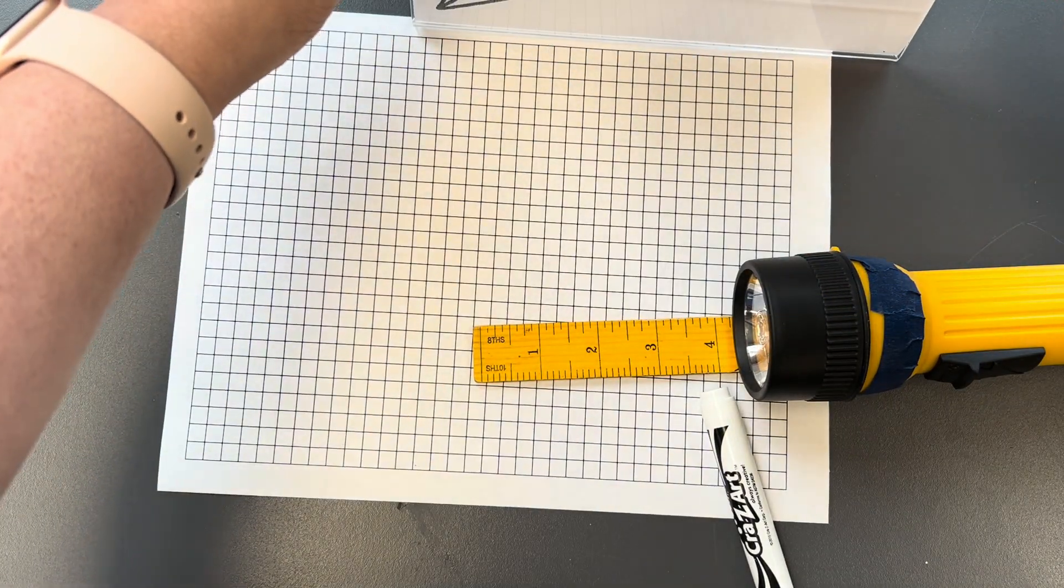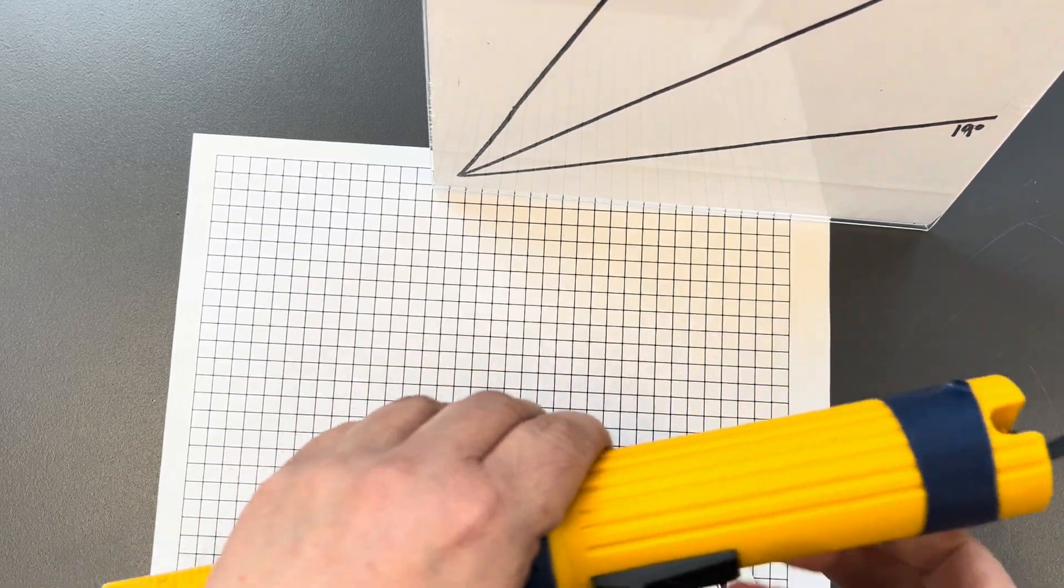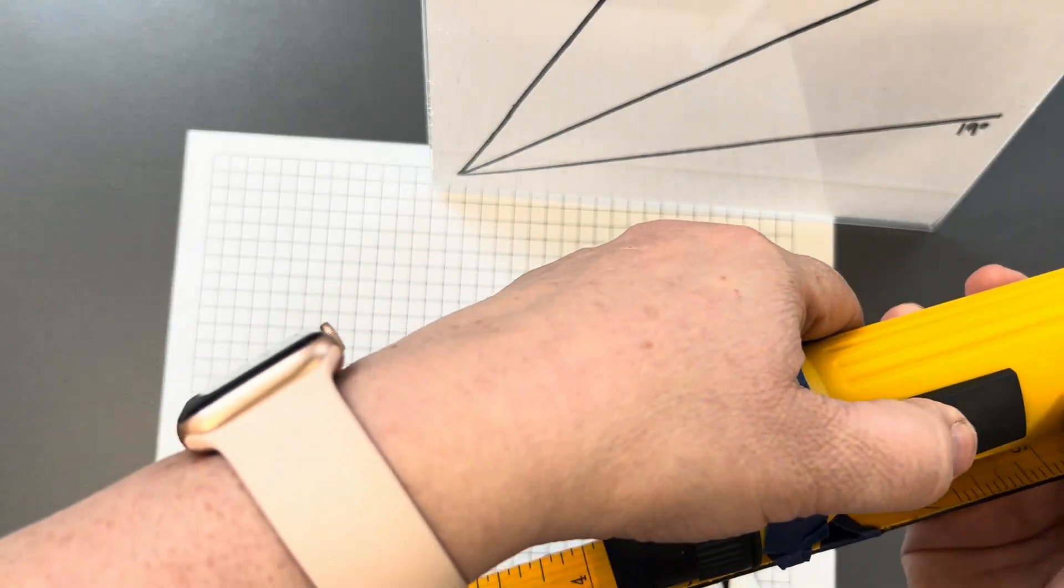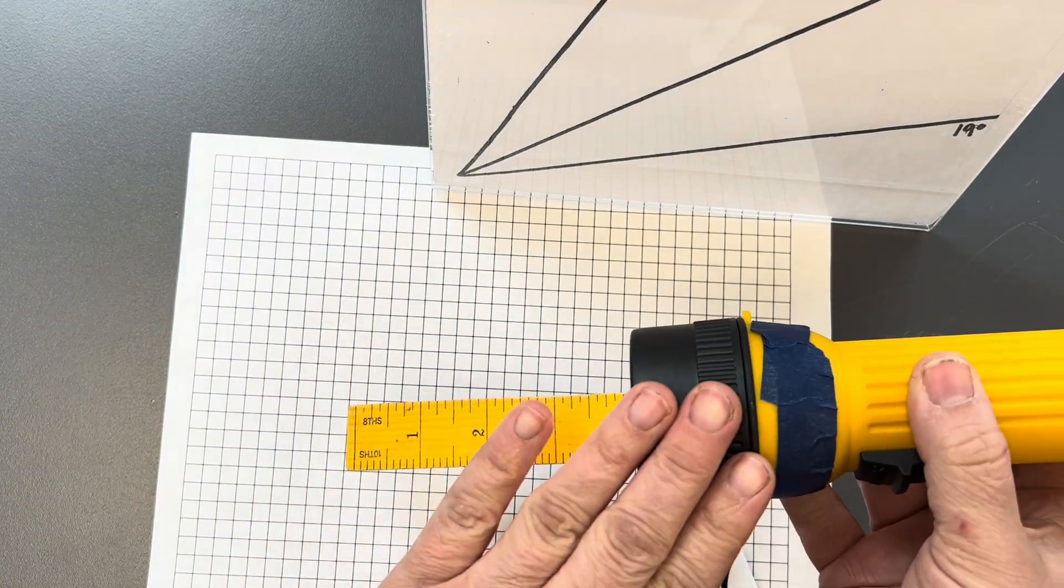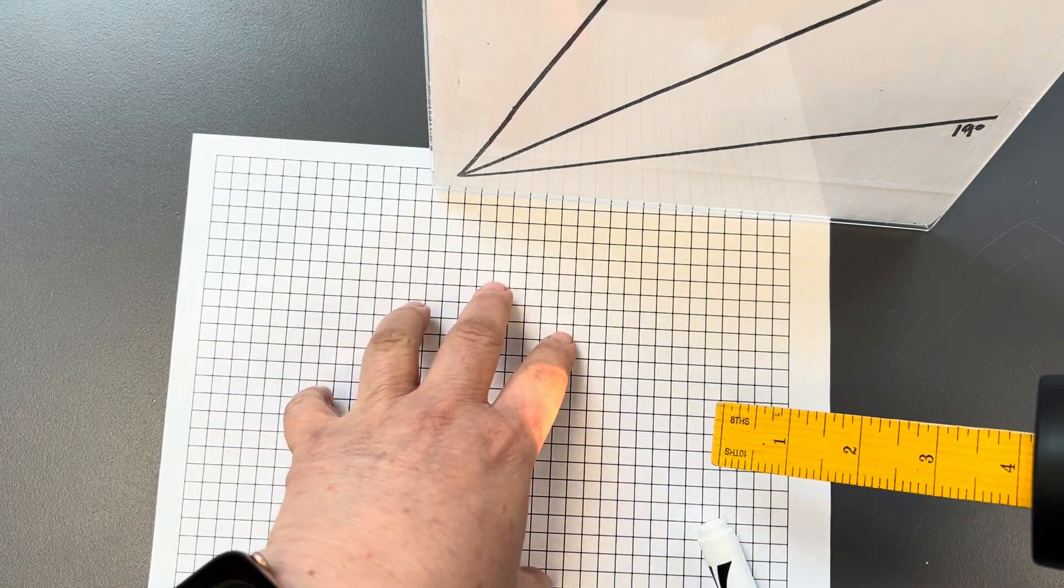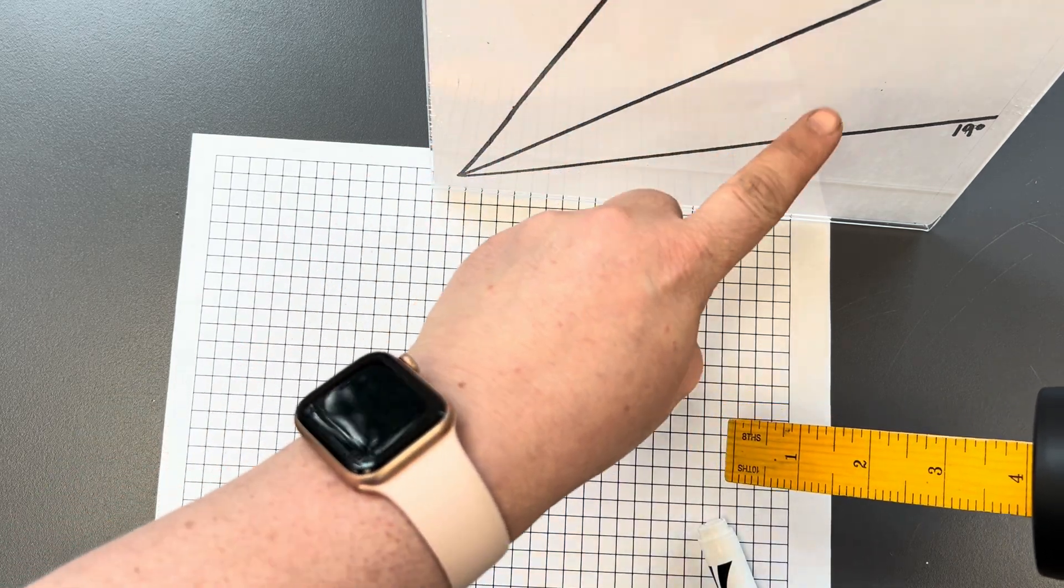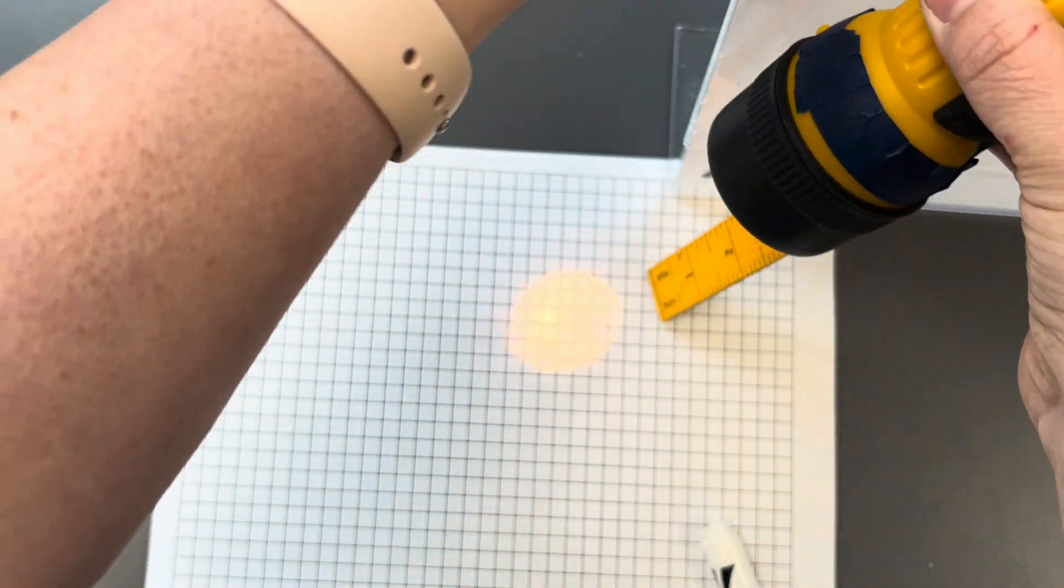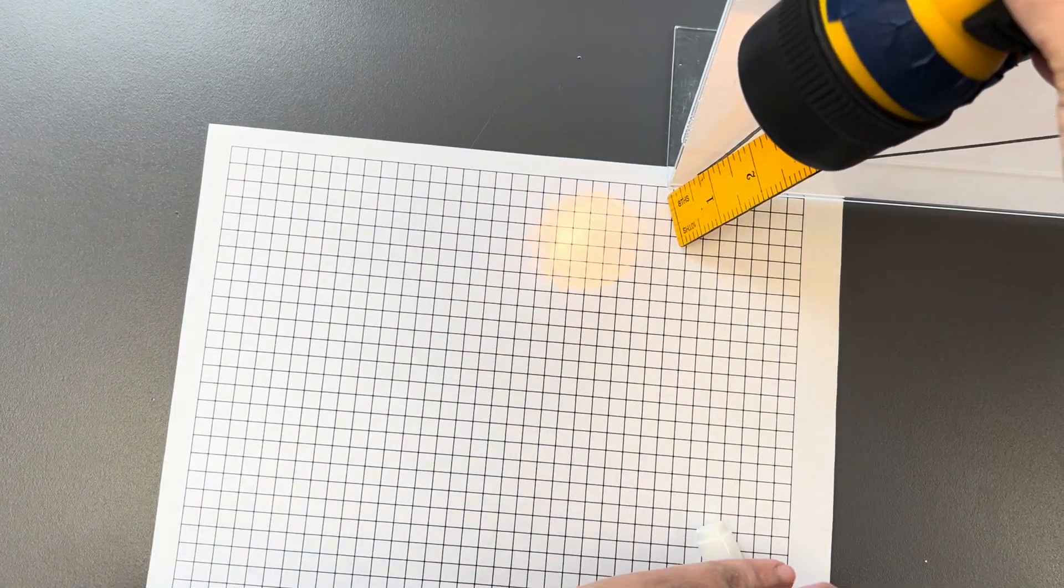Again, what does that have to do with temperature and different seasons? So, if we use this model, this flashlight, as a model for our sun, and the squares as a model for our earth, and the lines as a model for the elevation of the sun at different times of year, we can start thinking about how might elevation impact temperature.